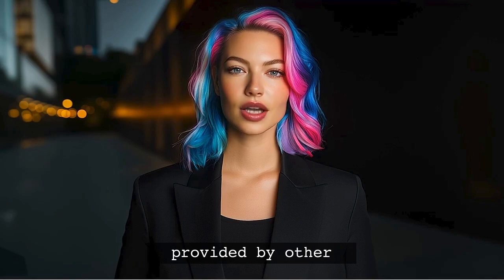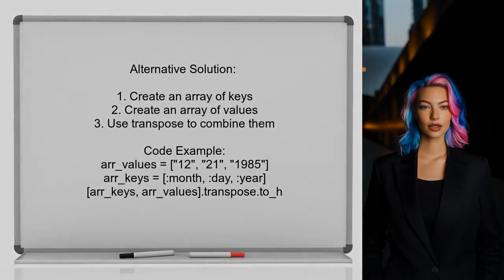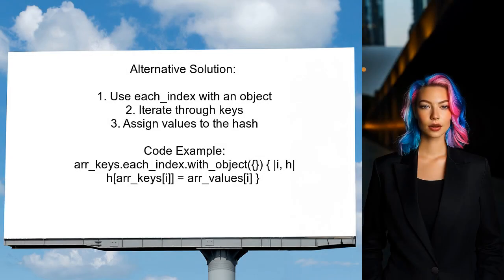Now let's look at the answers provided by other users. An alternative solution involves using the transpose method — creating two arrays, one for keys and another for values, and then transposing them to form the desired hash. Additionally, a second method uses each_index with an object, iterating through the keys and assigning each corresponding value to the hash.